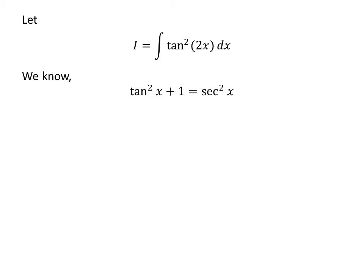We know the famous trigonometry identity: square of tangent of x plus 1 is equal to square of secant of x. The video explaining this identity is appearing in the upper right corner, and the link is also in the description. From this identity, we get square of tangent of 2 times x is equal to square of secant of 2 times x minus 1.